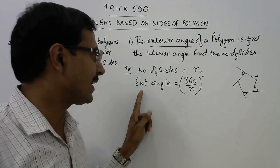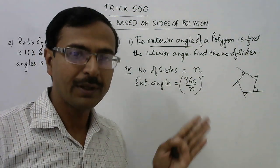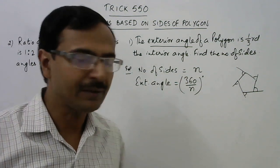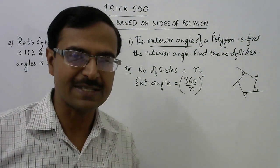Each exterior angle of a regular polygon is 360 upon n, or for that matter any polygon of n sides, each exterior angle is equal to 360 upon n.